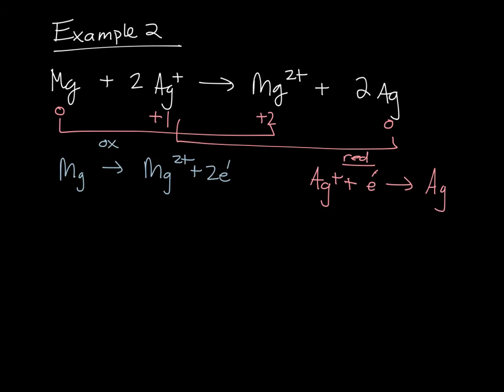If I remember that really weird phrase, red cat and ox, I can remember that my reduction is my silver, and my anode is the oxidation. That'll be the magnesium.